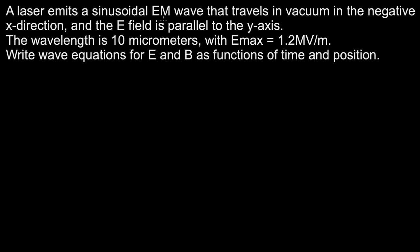A laser emits a sinusoidal electromagnetic wave that travels in vacuum in the negative x direction, and the electric field is parallel to the y axis. The wavelength is 10 micrometers with E max as 1.2 megavolts per meter. The question is to write the wave equations for electric and magnetic field as functions of time and position.